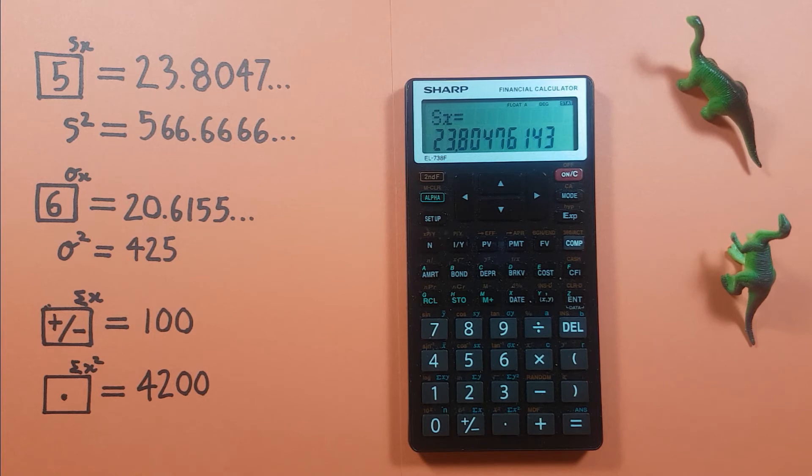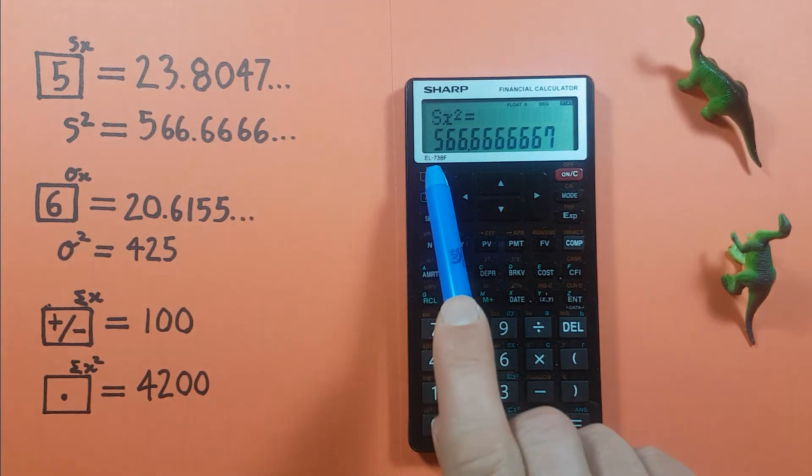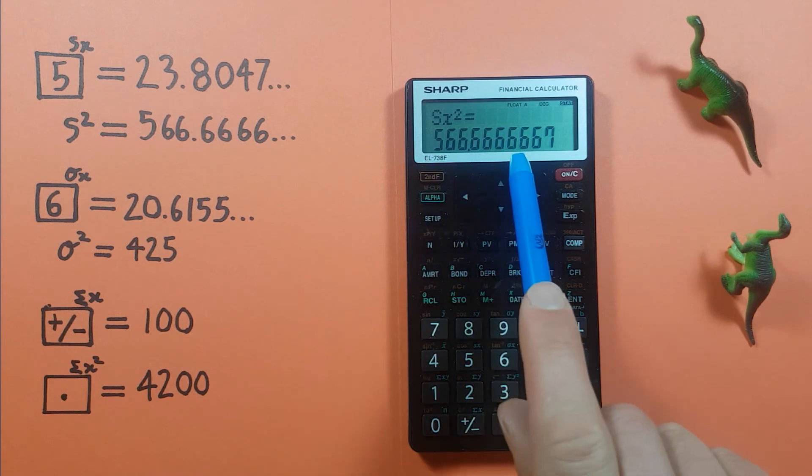We can also determine our sample variance by squaring this number. So to do that we hit the second function and then the period key here with the second function of x squared and equals and here we see we get a sample variance of 566.6666 etc.